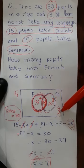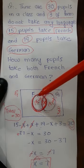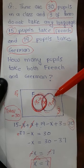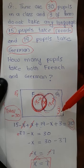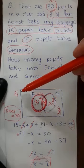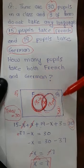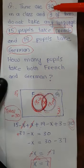Three students are those who are not studying French or German. So they will not be part of the French circle or German circle. They will be outside these two circles but within the rectangle, because they are part of the universal set. Now, the total strength of pupils is 30, so all students inside the rectangle — including those in the two circles — must add up to 30.